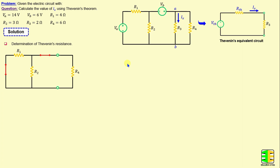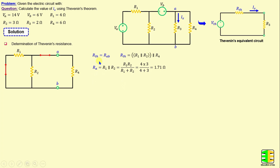The Thevenin resistance represents the equivalent resistance between terminals A and B when R3 is disconnected. That means Rth equals the parallel combination of R1 and R2, in parallel with R4. Let Ra equal the parallel combination of R1 and R2, so Ra equals R1 times R2 over R1 plus R2. Substituting numerical values, Ra equals 1.71 ohms.